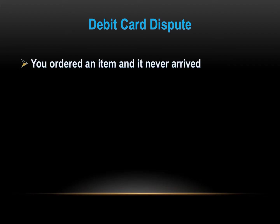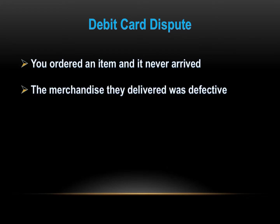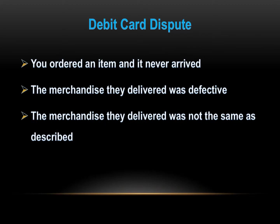Here are some cases that would call for a dispute. You ordered an item that never arrived — for example, you ordered a camper trailer tent for $600 from an online camping equipment store, but they never delivered it. The merchandise they delivered was defective or not the same as described — for example, you ordered a 21-speed bike on display at a store, but when your order arrived it had cheap substitute parts. The merchant charged you more than the stated price — for instance, you bought a high-end bag on sale at 35% off, but the merchant charged you the full amount and refused to refund the discount.